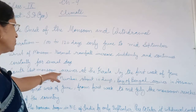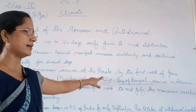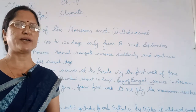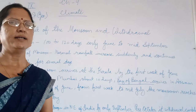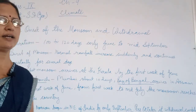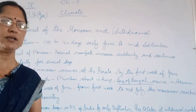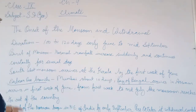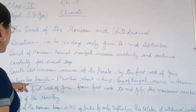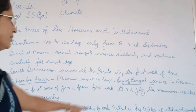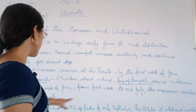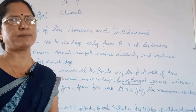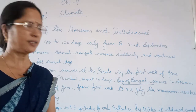The Southwest Monsoon arrives at the coast of Kerala by the first week of June. Southwest monsoon hits the coastal area of Kerala first — that is when rainfall begins, in the first week of June. Similarly, the Bay of Bengal branch arises in Assam also in the first week of June.